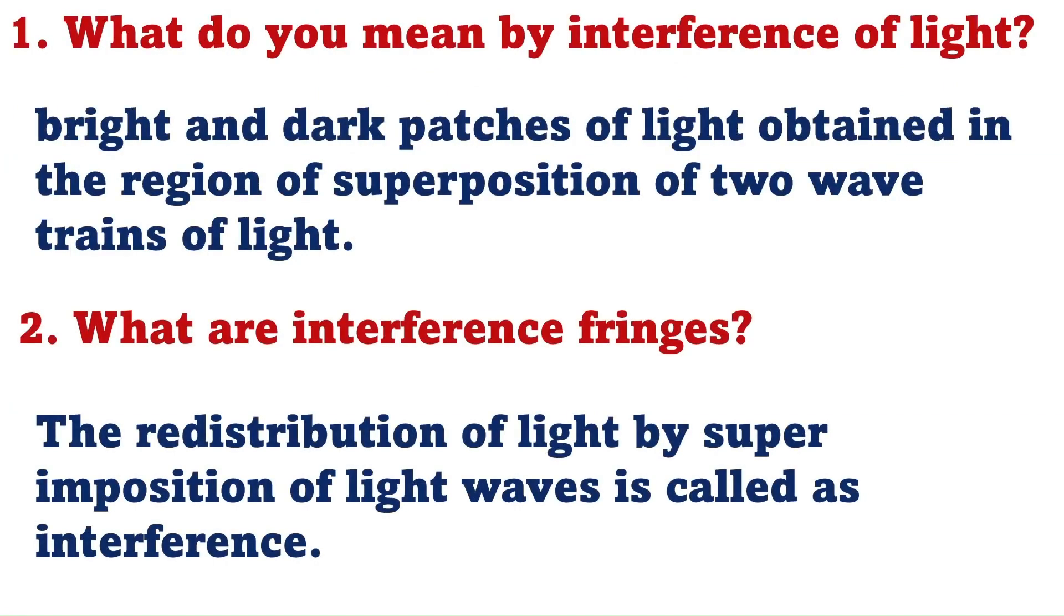The first question is, what do you mean by interference of light? Bright and dark patches of light obtained in the region of superimposition of two wave trains of light is called interference. And what are interference fringes? The redistribution of light by superimposition of light waves is called interference.